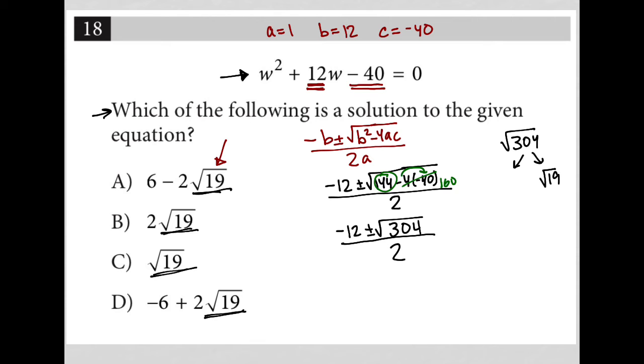It's 16. So this would be 16 here. The square root of 16 is 4. So that means the square root of 304 can be rewritten as 4 root 19. So that's what I'm going to do. Let's say I have negative 12 plus or minus 4 root 19 all over 2.